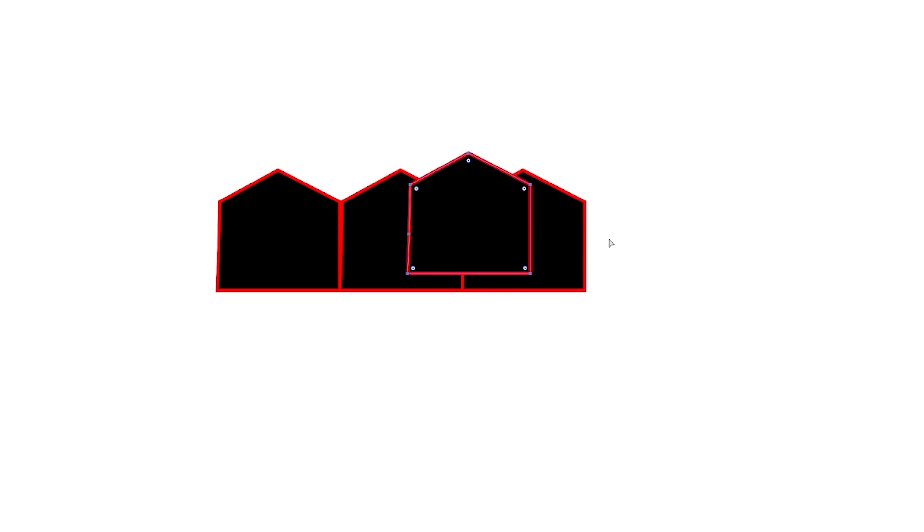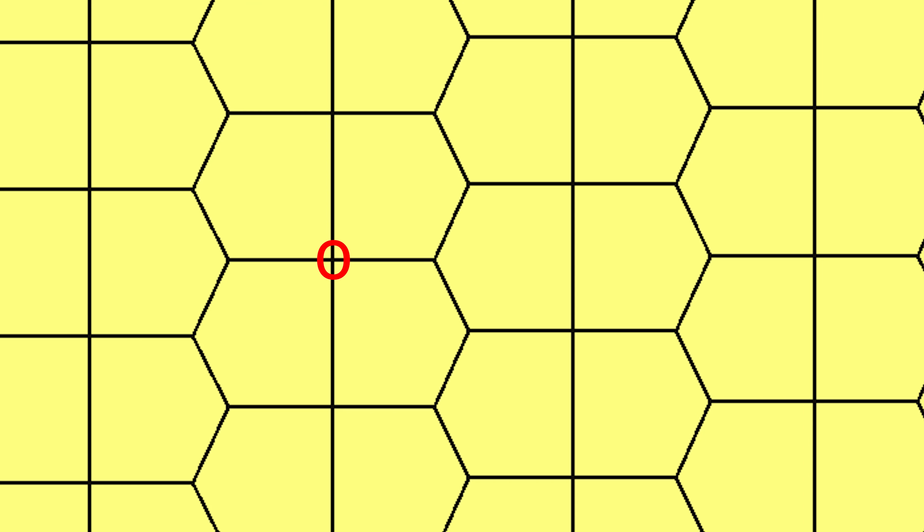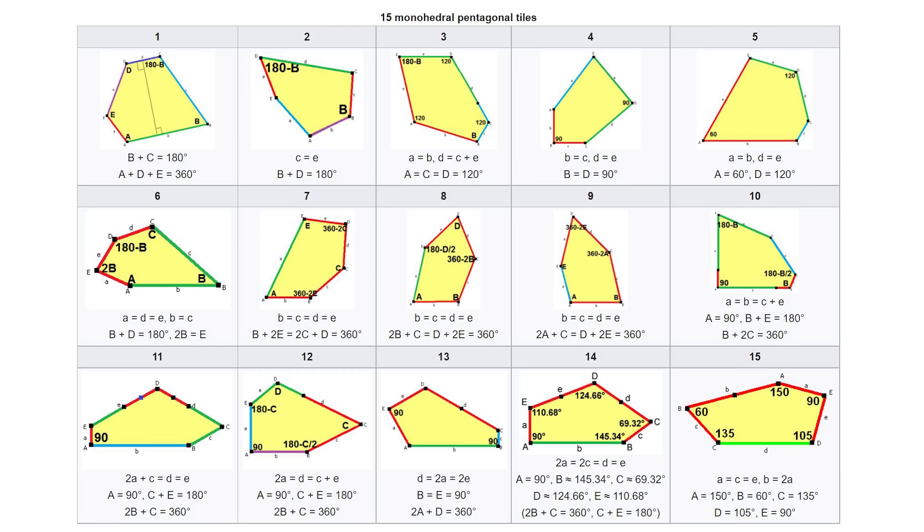But if you just draw your pentagon differently, like this, kind of like a house, then it will tessellate. Because on this vertex you have 180 plus 90 plus 90, which is 360. And then on this vertex you have each angle that's 120 degrees, which adds up to 360. There's actually only 15 different types of convex pentagons that tessellate together.